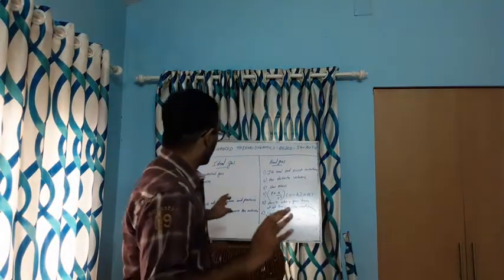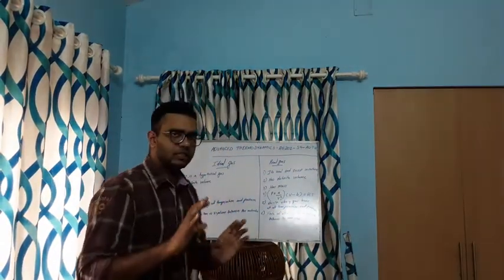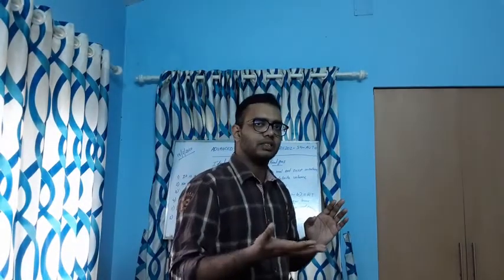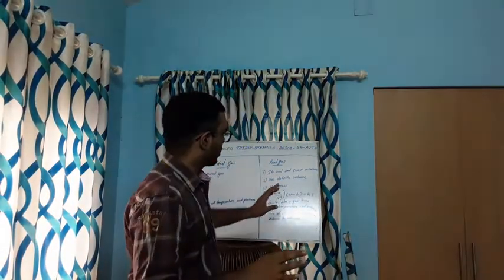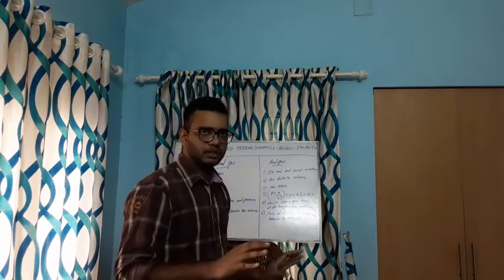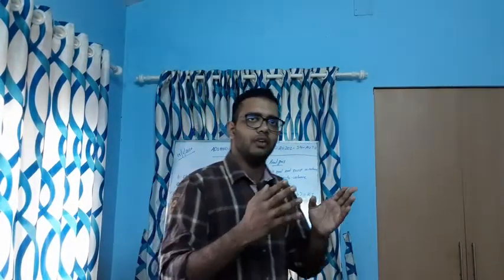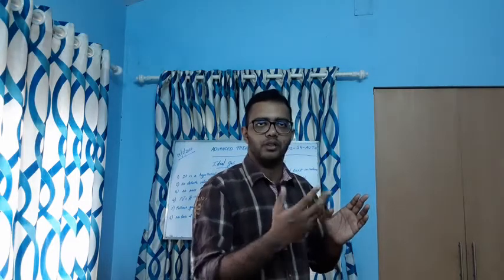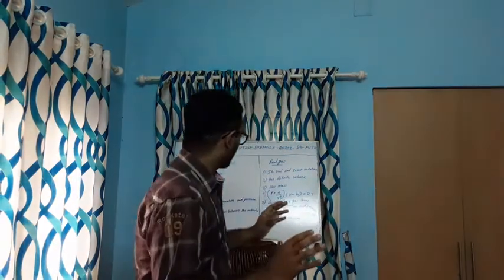Next, for an ideal gas there is no specific mass — we take the theoretical mass as assumed. And for a real gas, it has mass — we take the real value of the mass of the substance under observation.